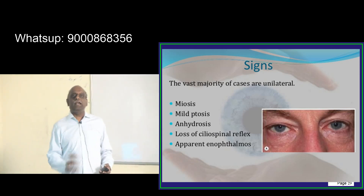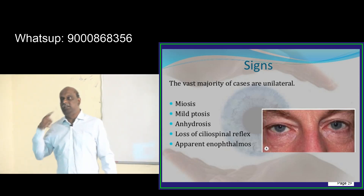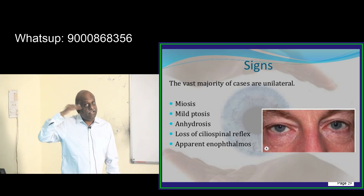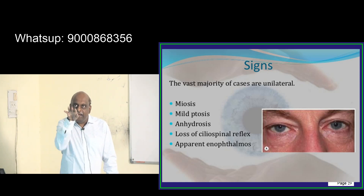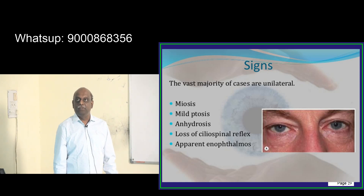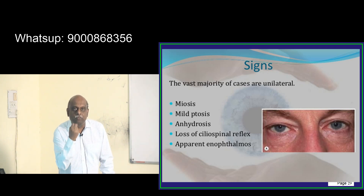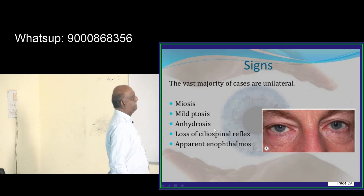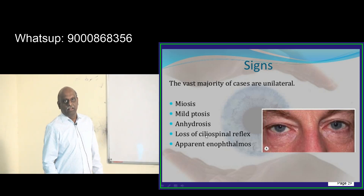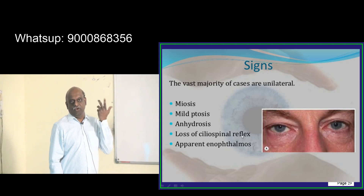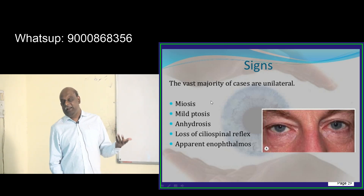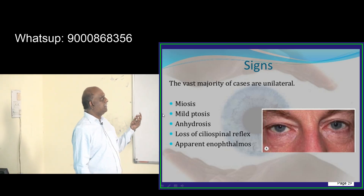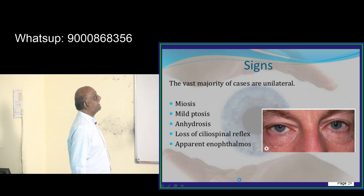So, miosis — why does miosis happen in Horner's syndrome? The tarsal muscle elevates the eyelid and has sympathetic innervation. When Horner's causes sympathoplegia, the tarsal muscle is affected, leading to ptosis. Anhydrosis occurs because the sympathetic nervous system controls sweating; if paralyzed, you get anhydrosis, enophthalmos, and miosis — these are the classical features.